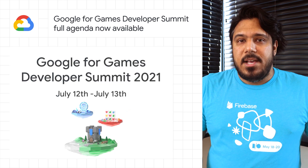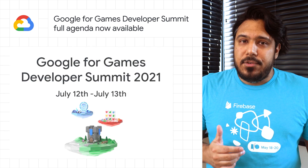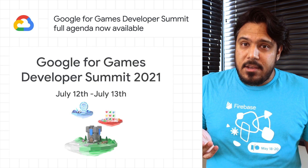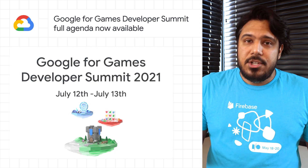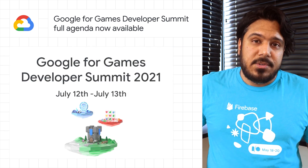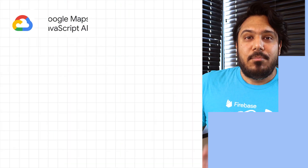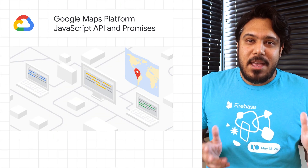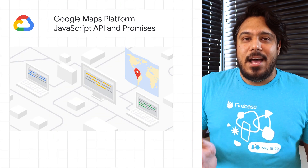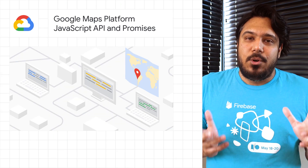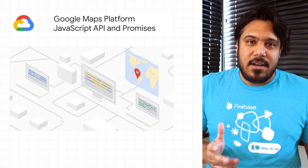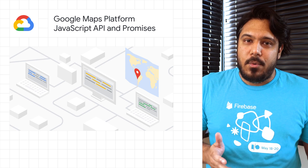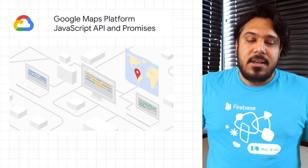The event takes place from July 12th to July 13th. To register, check out the link in the post. Promises support for the Maps JavaScript API is now available as of the quarterly release of version 3.45 in the weekly channel.